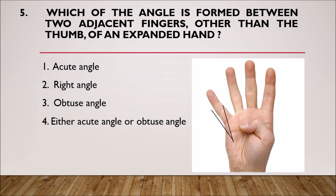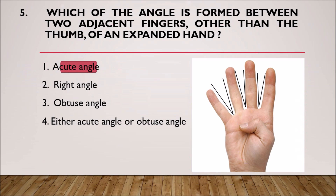Here we have a hand. The angle formed by the covering finger and little finger is an acute angle. The angle between the index finger and the middle finger is also an acute angle. So the first option, acute angle, is the correct answer.